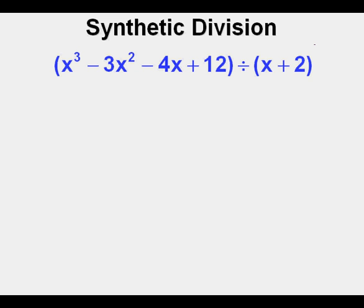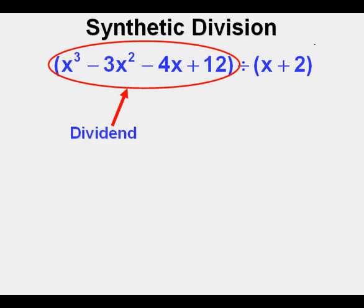Here's the problem as first written. This part quantity x cubed minus 3x squared minus 4x plus 12 is called the dividend, the expression being divided.